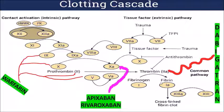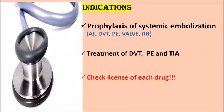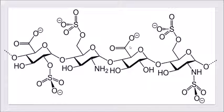Indications for anticoagulants include prophylaxis of systemic embolism like atrial fibrillation, deep vein thrombosis, pulmonary embolism, valve disease, and rheumatic heart disease. Or the treatment of DVT, deep vein thrombosis, pulmonary embolism, or transient ischemic attack. Not every drug is licensed for all these indications, so you need to check the licensing of each drug.